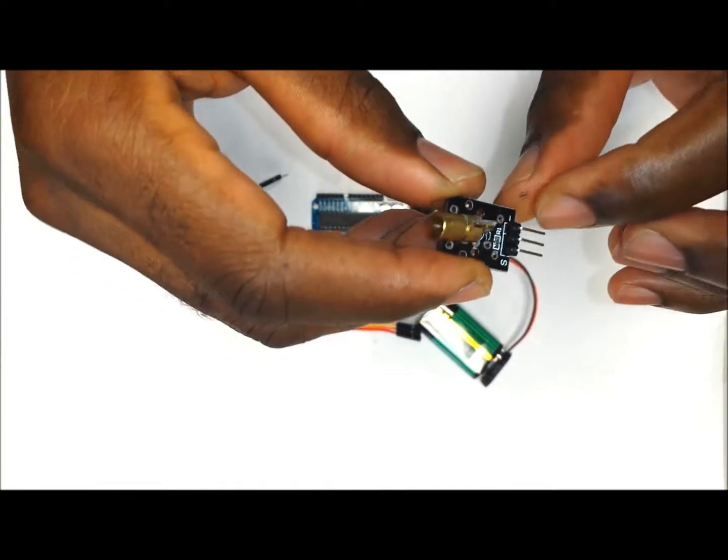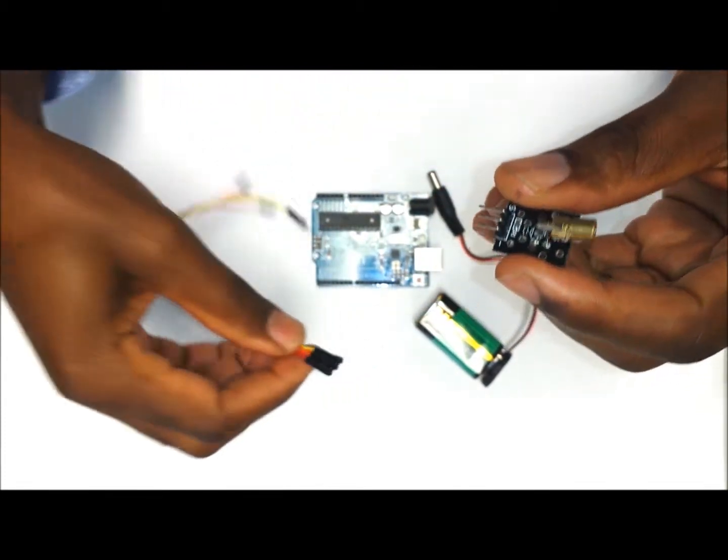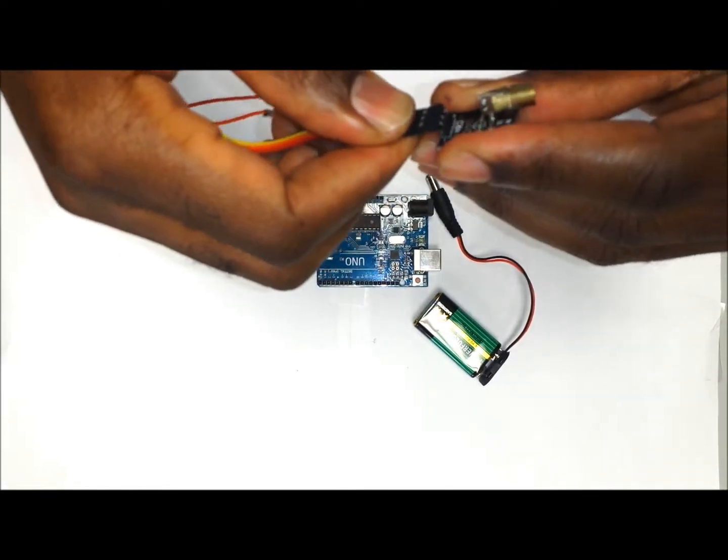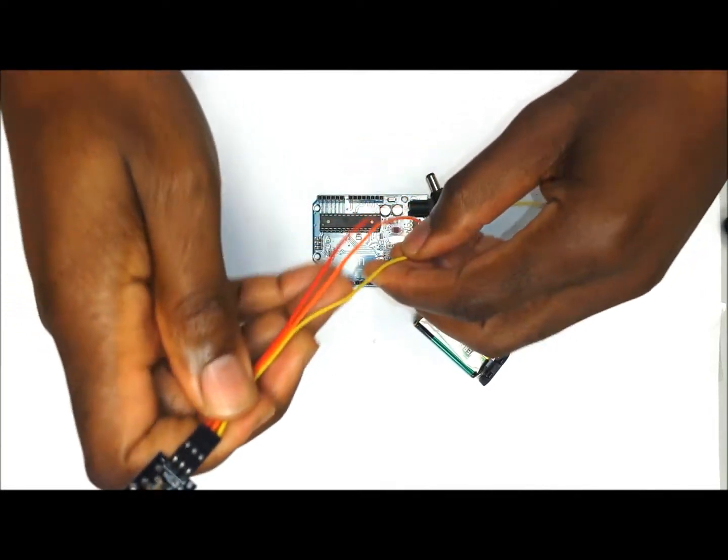We are going to need three wires to hook it up to the Arduino. The outside wire, which is the signal wire, we are going to hook to pin number nine on the Arduino.